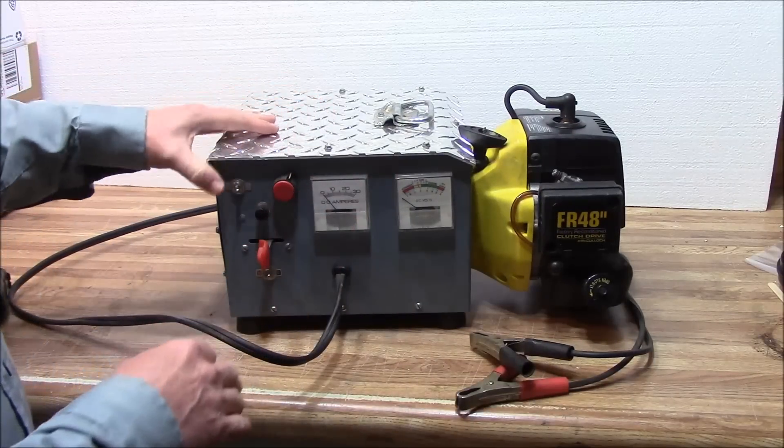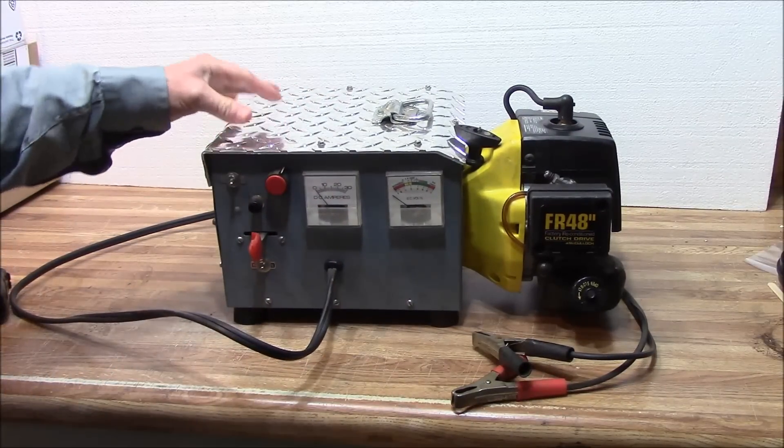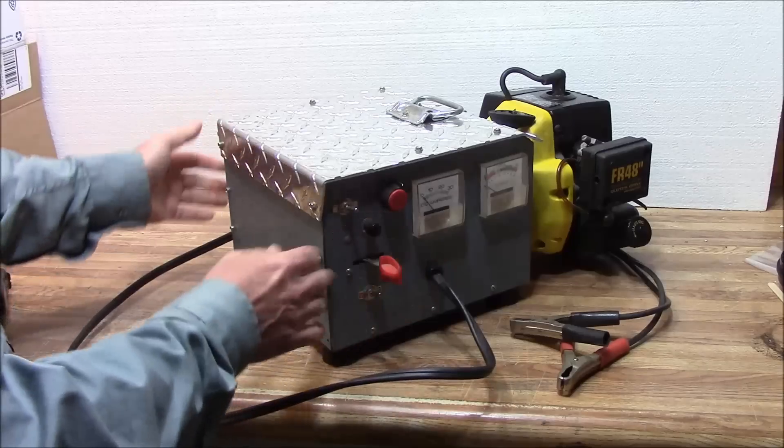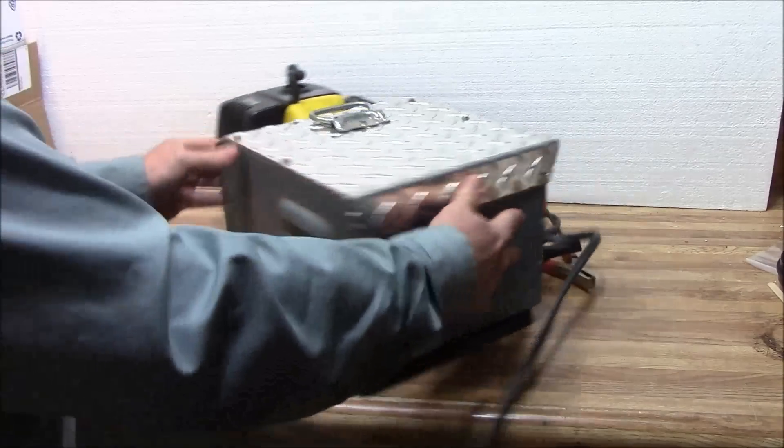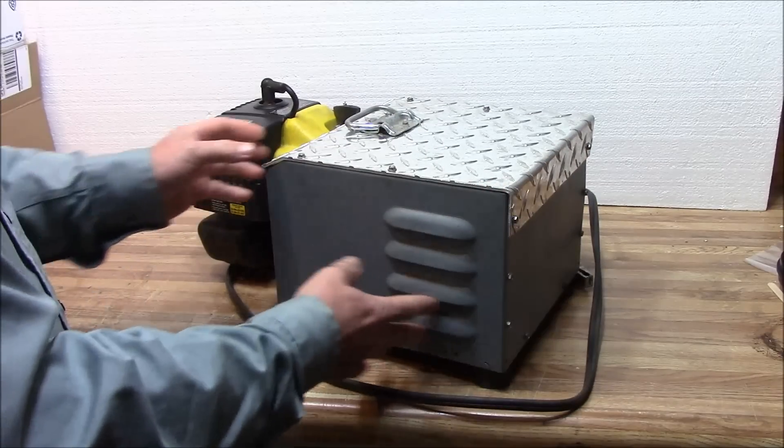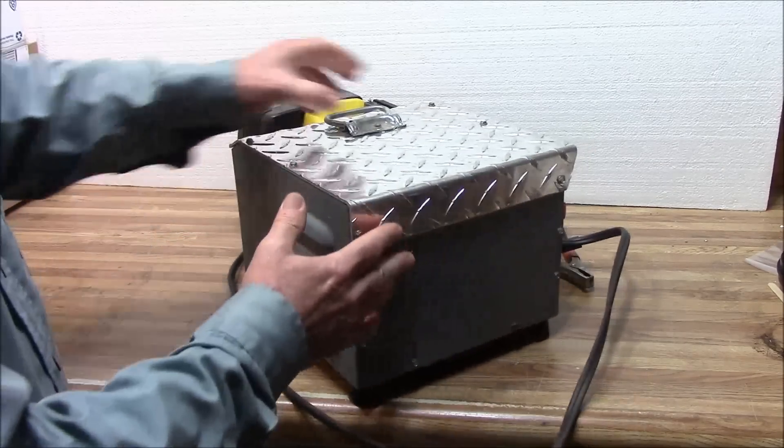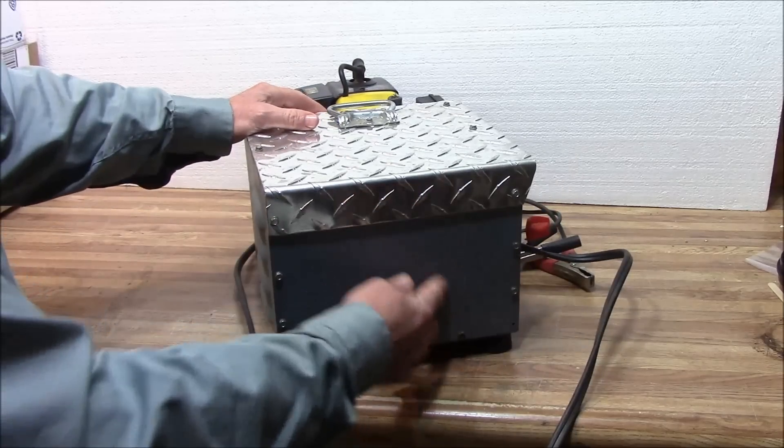Then I added this top to it - just diamond plate aluminum. A friend of mine builds trailers and gave me this little chunk of aluminum, and I added sides to it. In the back I've got vents for the alternator cooling. The alternator is right in here.